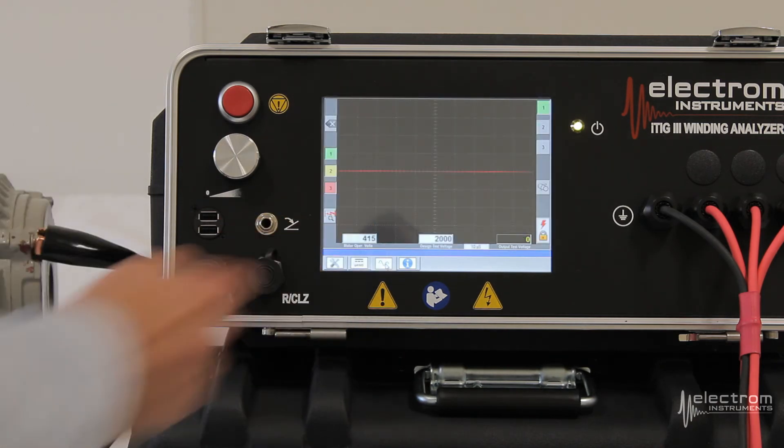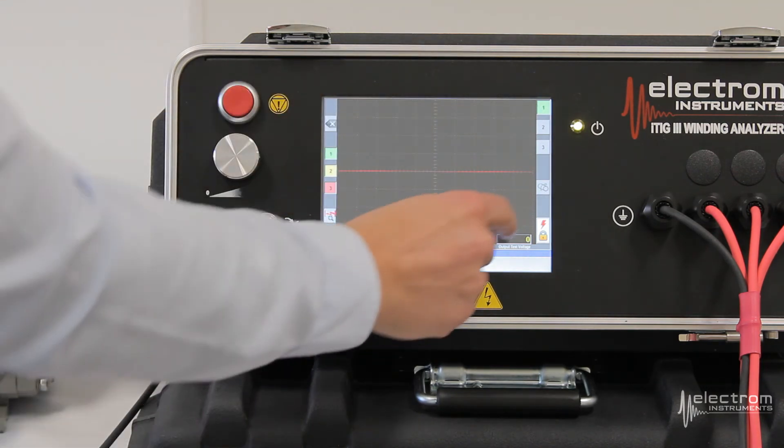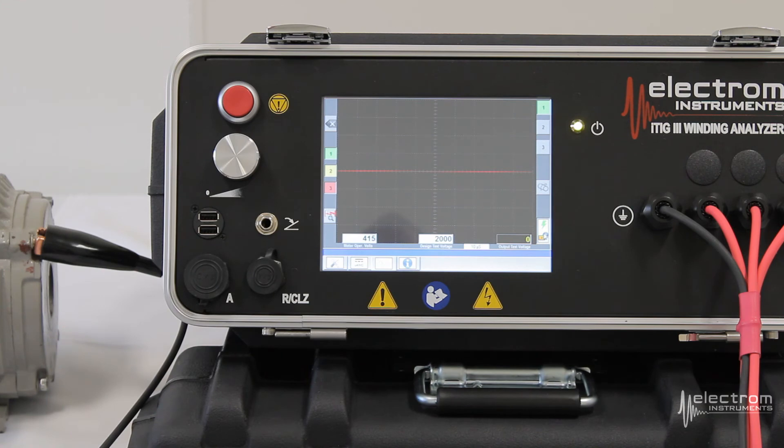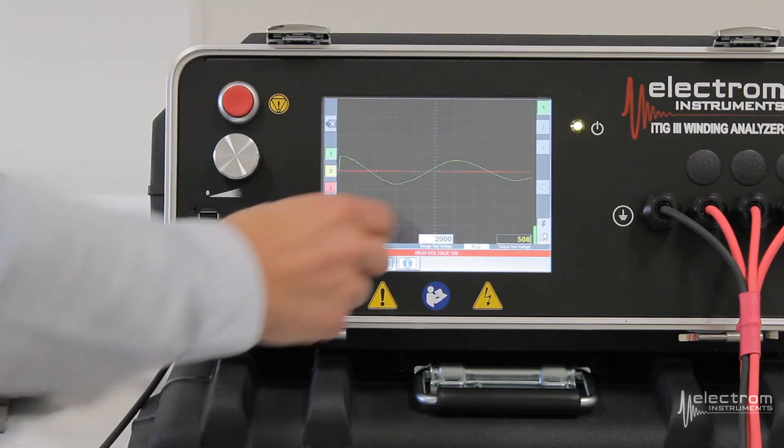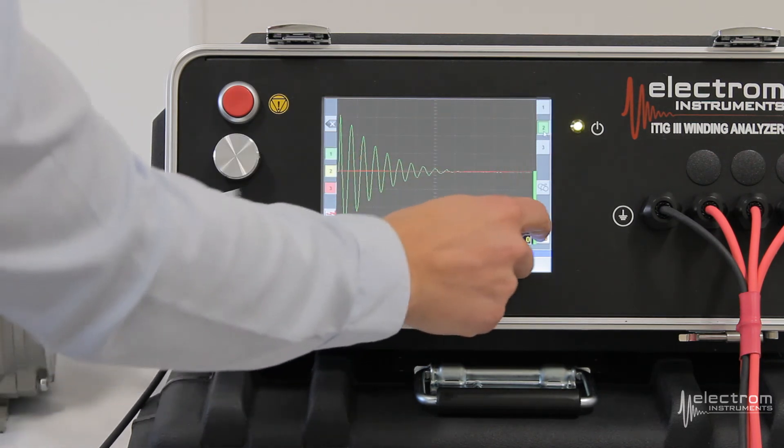Last step here is the surge test. Lead 1 will be the first one to be energized. You arm the instrument. Press the red button. It will automatically set the time base and voltage scale. Drive the voltage up to our design test voltage, 2000 volts in this case. Then you'll do the same for phase 2.